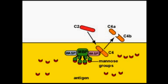Once C4 has been cleaved into C4b and C4a, the second part will be C2. This will continue the same exact pathway as the classical pathway, so the rest follows from there.